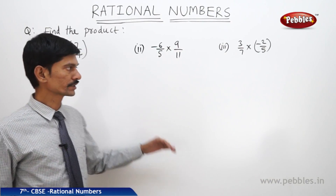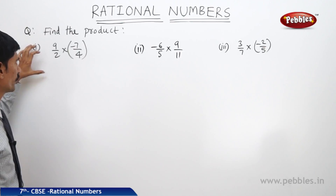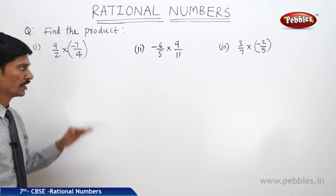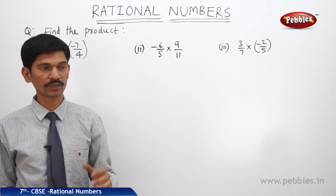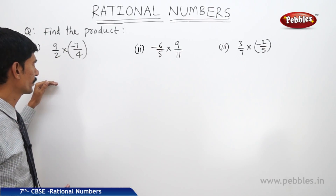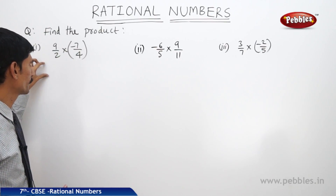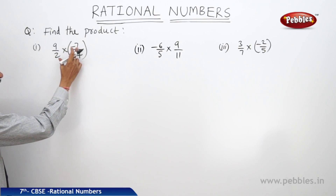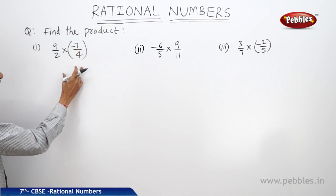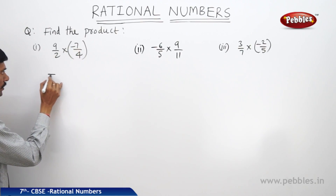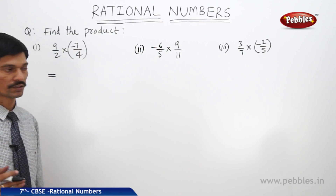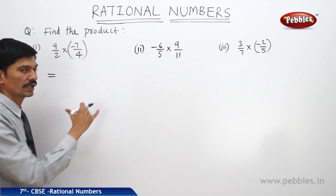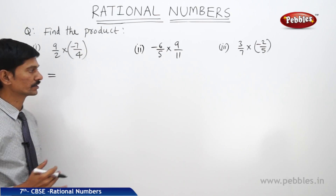Let us solve the next question: Find the following products. So far we have done addition and subtraction of rational numbers. Now let us do some problems in multiplication. In the first question, 9 by 2 is multiplied by minus 7 by 4. While multiplying any two rational numbers, we find the product of the numerators and the product of the denominators.